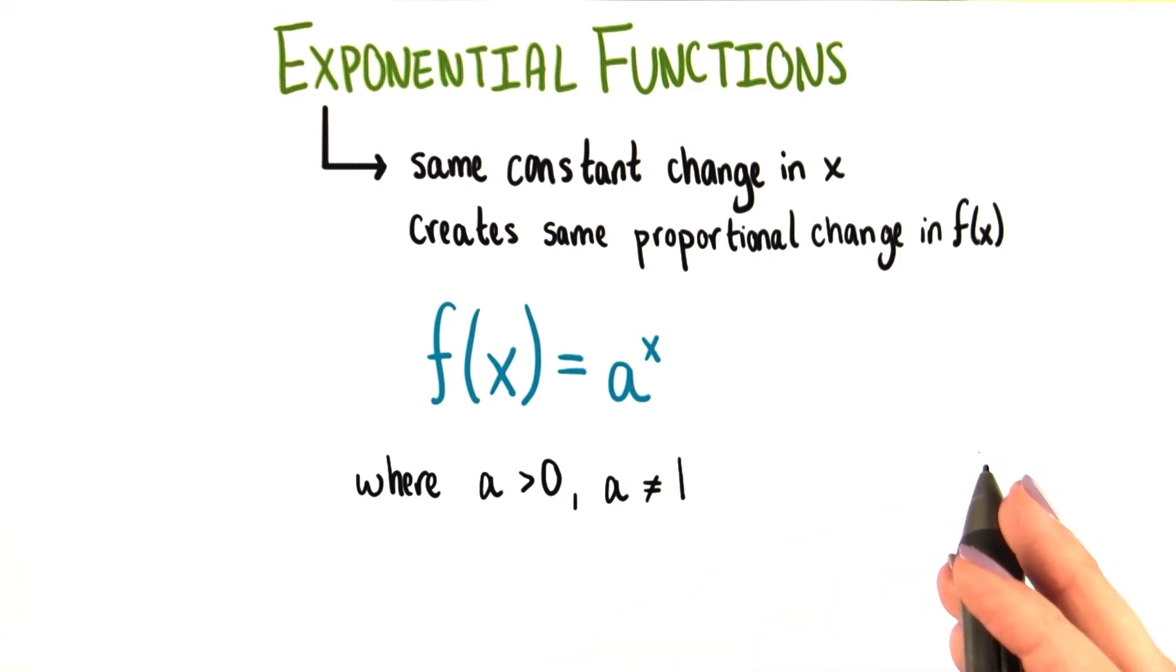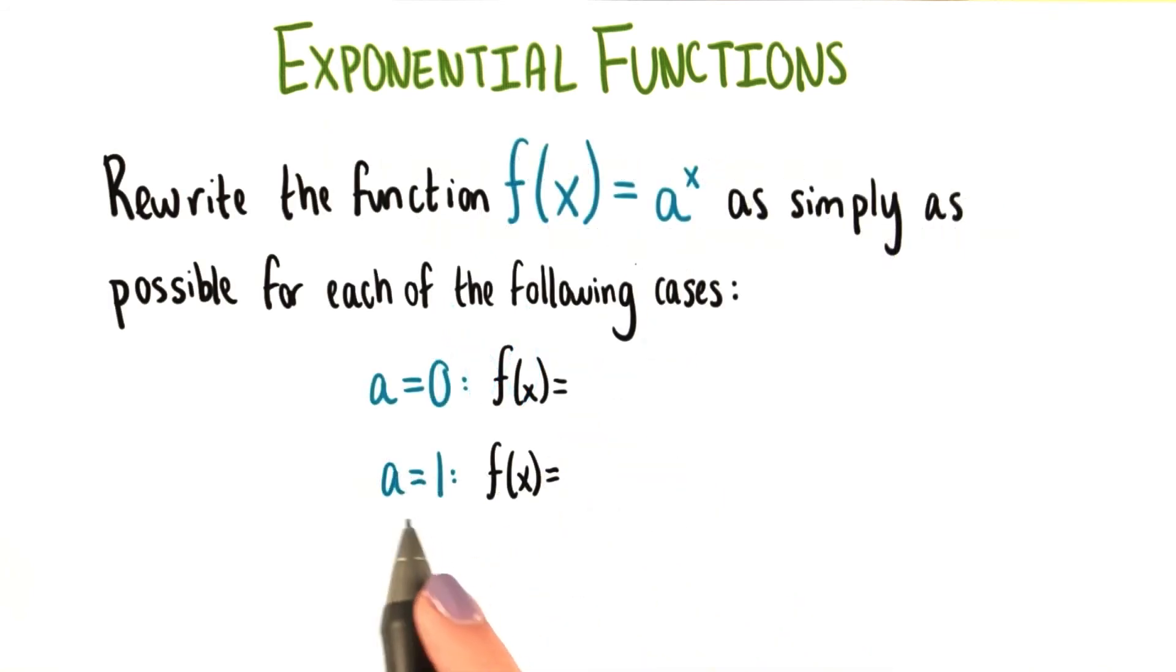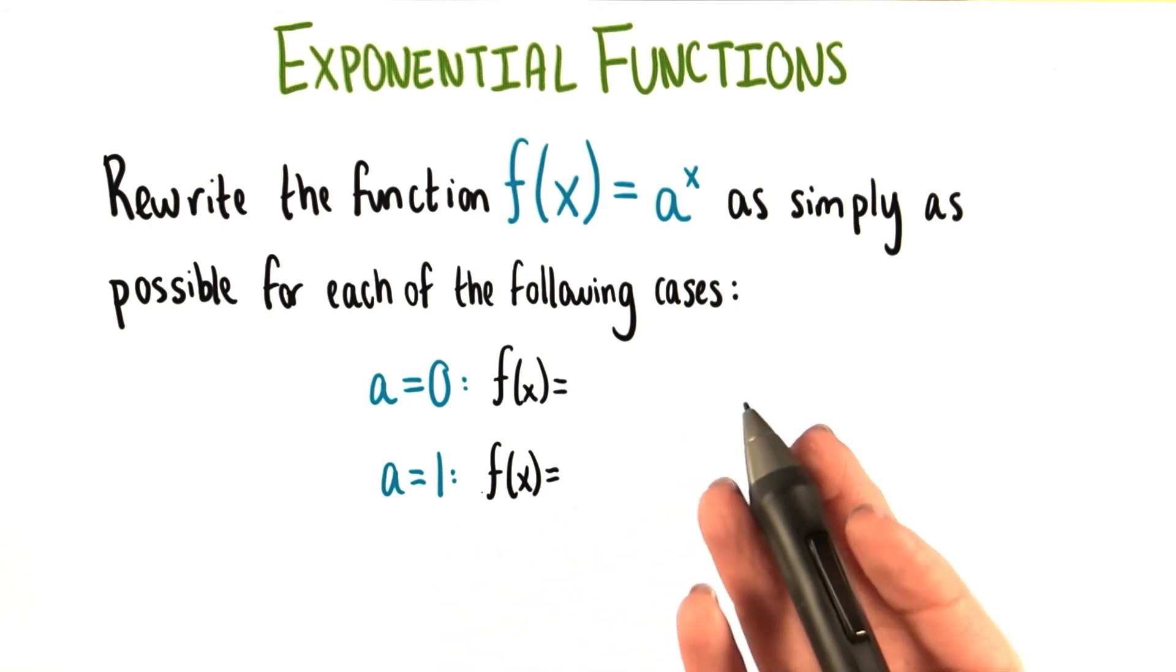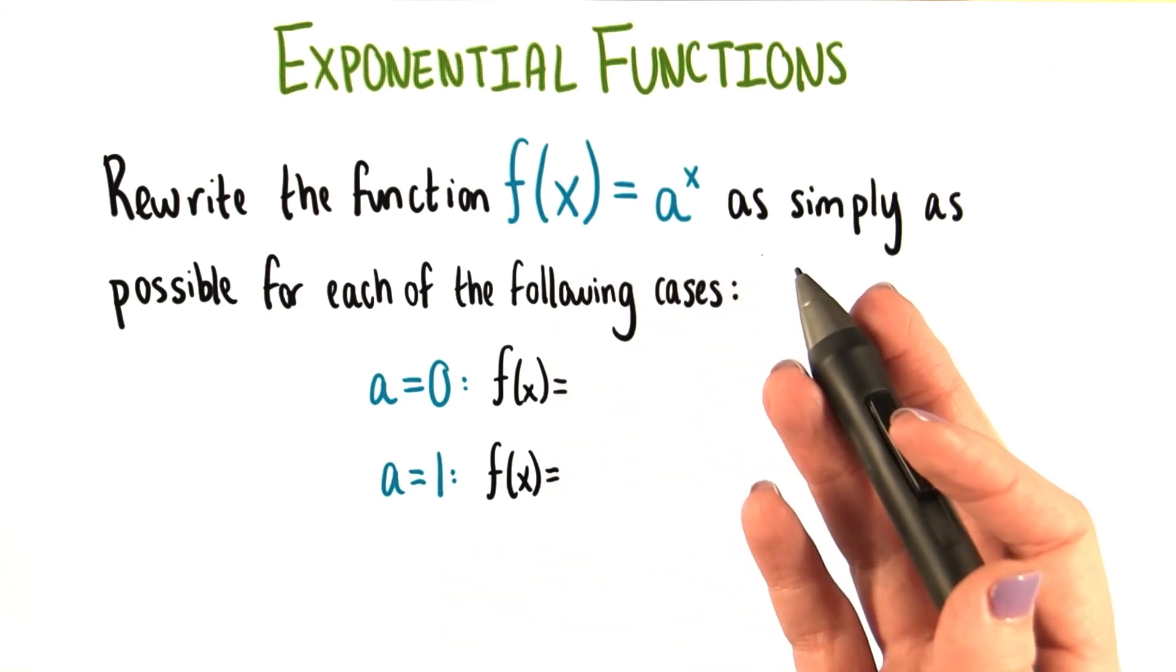Before we move on, let's just look at why a can't be 0 and can't be 1. Well, what is f of x if a equals 0? What if a equals 1? For each of these, rewrite the function as simply as possible.